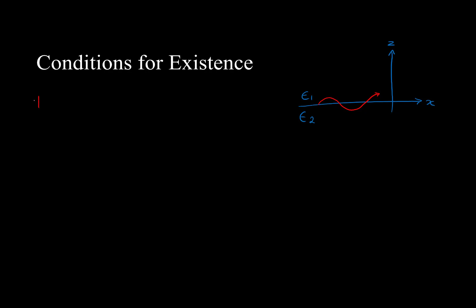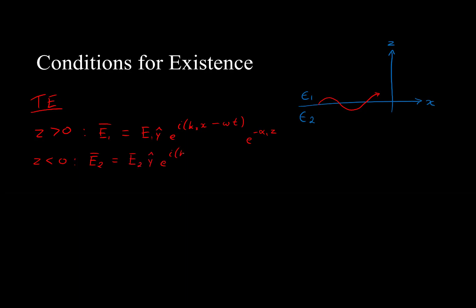So first we'll examine the transverse electric case. In this case, where z is greater than zero, or in air, our electric field will be comprised of the magnitude of the field in the y direction because of our transverse assumption, with the wave propagating in the x-direction and oscillating in time. The wave will decrease in amplitude as it increases in distance from the x-axis. Similarly, when z is less than zero, we'll have our second electric field in much the same way, also decaying as a function of distance from the x-axis. In this case, alpha 1 and alpha 2 are greater than zero.